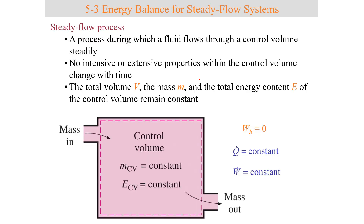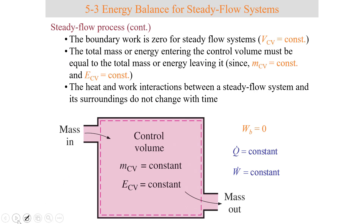Now let's think about this in terms of a steady flow process. A steady flow process is a process during which a fluid flows through a control volume steadily, meaning there's no change in the flow rate. There are no intensive or extensive properties within the control volume that change with time. So the total volume, mass, and total energy content of the control volume remains constant — the change in energy is zero. Also, for a steady flow process, the boundary work is zero, so it has a constant control volume, and the total mass or energy entering the volume must equal the total mass or energy leaving it. The heat and work interactions between a steady flow system and its surroundings do not change with time.